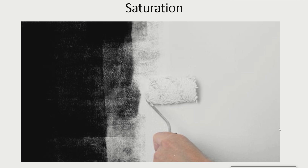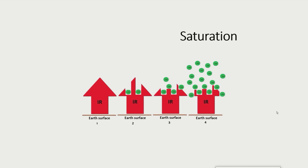To visualize saturation, let's start with an everyday life example. Anyone who has tried to paint a black wall white has made the following observation: after the first coat, the wall is dark grey; after the second coat it is grey. With following coats of paint, the wall becomes lighter and lighter. Then a coat thickness is reached where a further coat of paint does not make the wall any whiter. A similar effect is also observed when the concentration of the greenhouse gas in the atmosphere is increased.